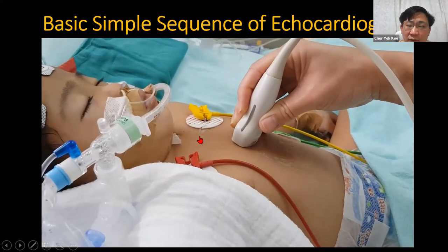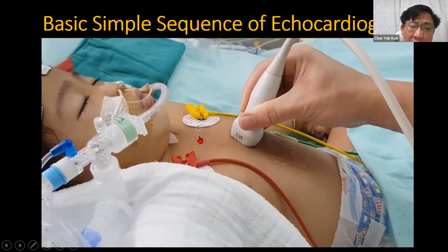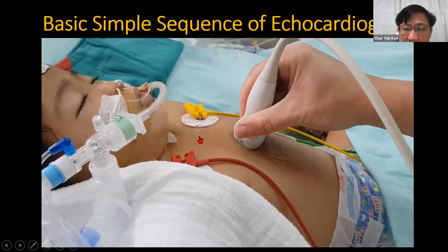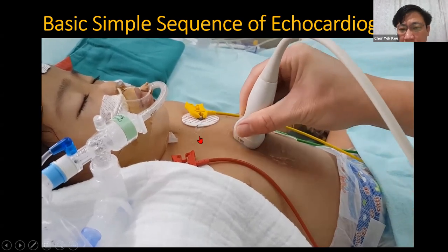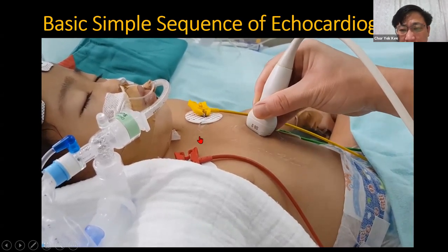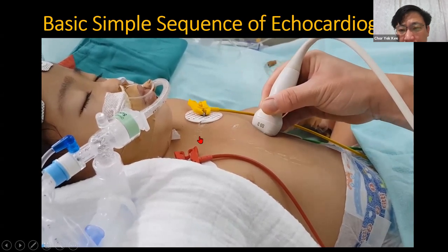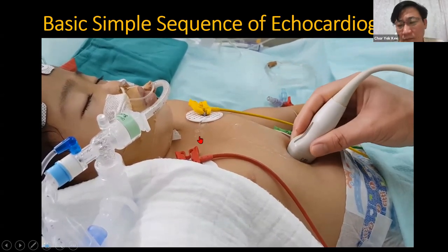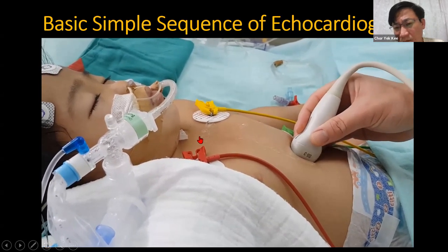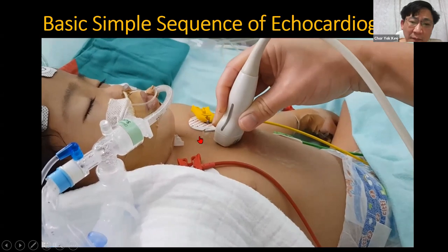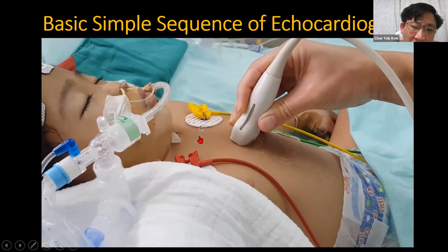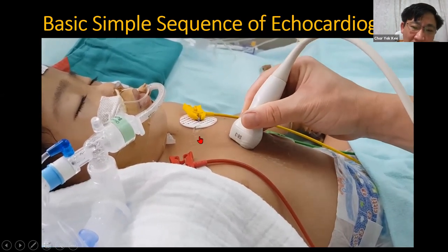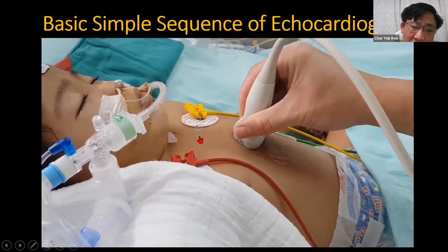After knowing all the views, here is a basic step-by-step process for performing an echocardiogram. Start from the parasternal position with the pointer pointing towards ten o'clock — that gives you the long axis. Then turn the probe 90 degrees to get the parasternal short axis view. Swing the probe up or down for different short axis views.